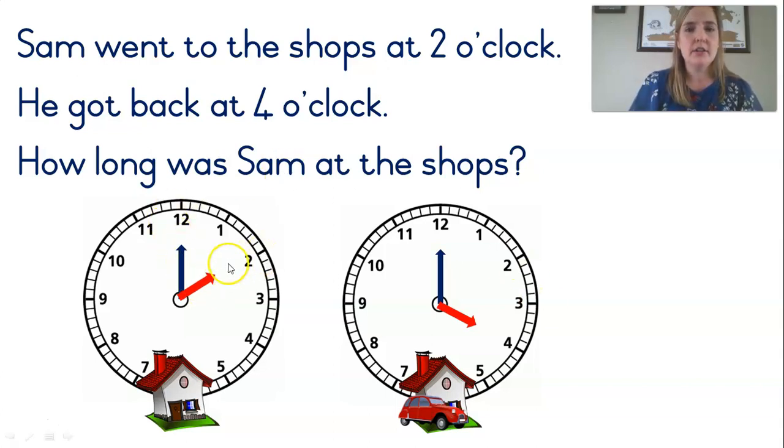Let's have a look. 2 o'clock. So, the clock would have had to go around 1 hour, would have got to 3 o'clock. And a whole other hour. And that would be 4 o'clock. So, how many hours then? 2. That's right. Sam was at the shops for 2 hours. Well done.